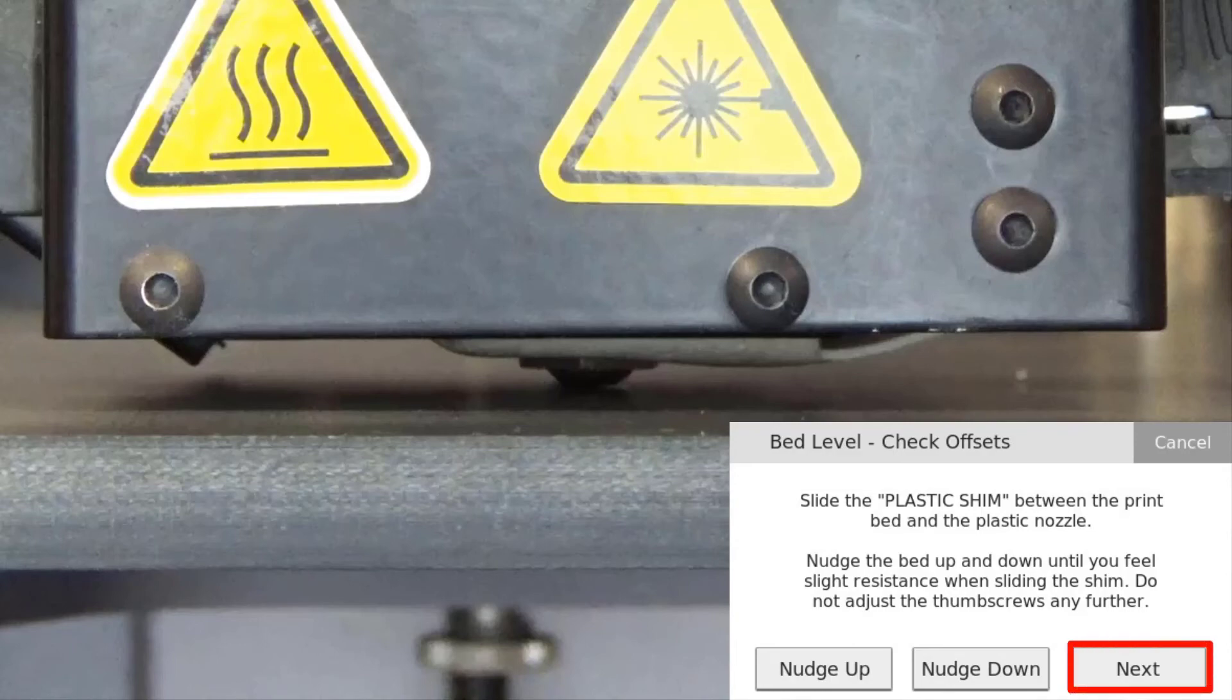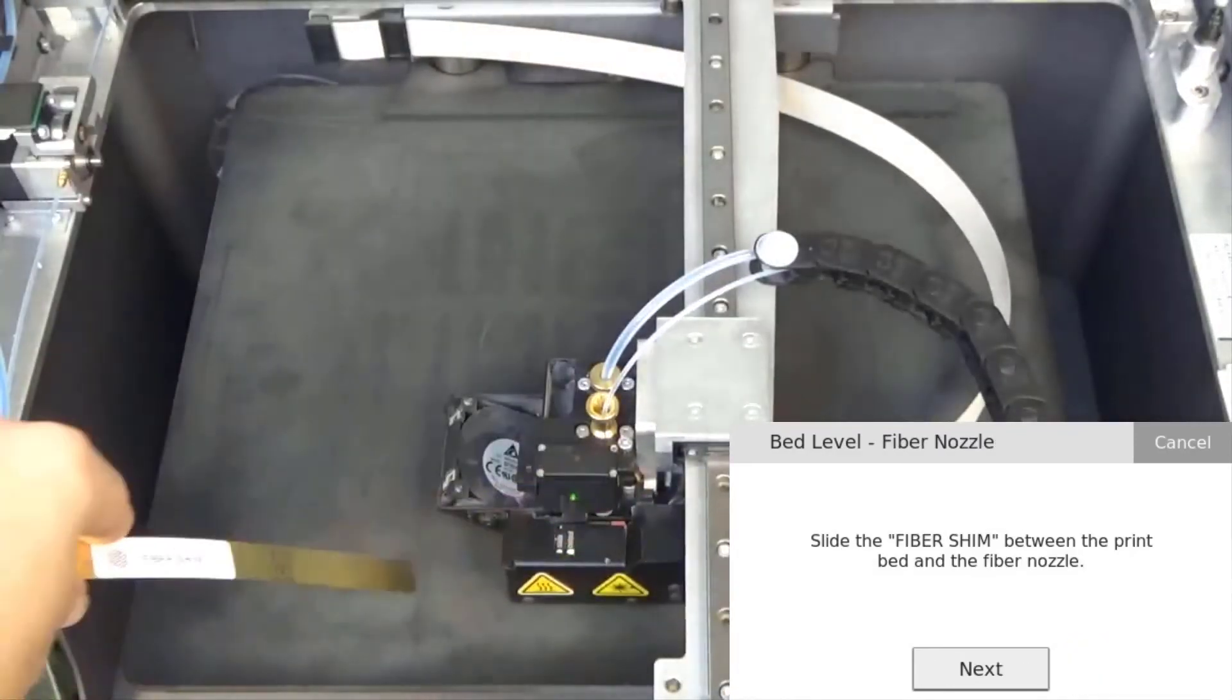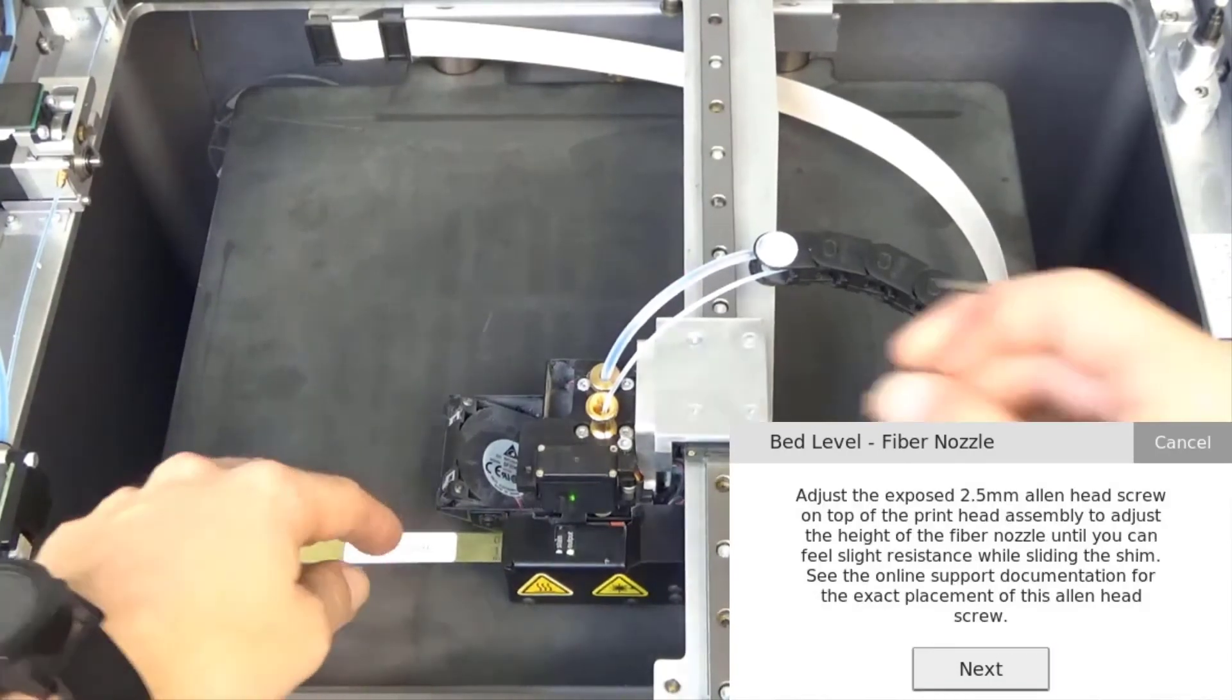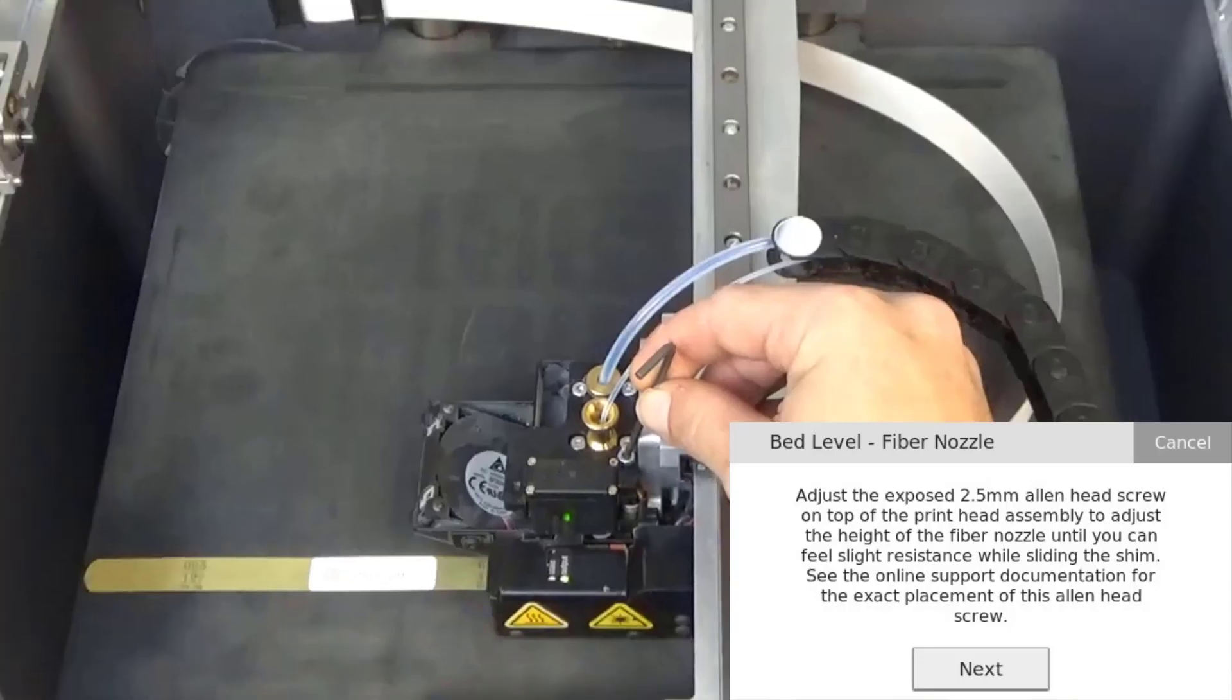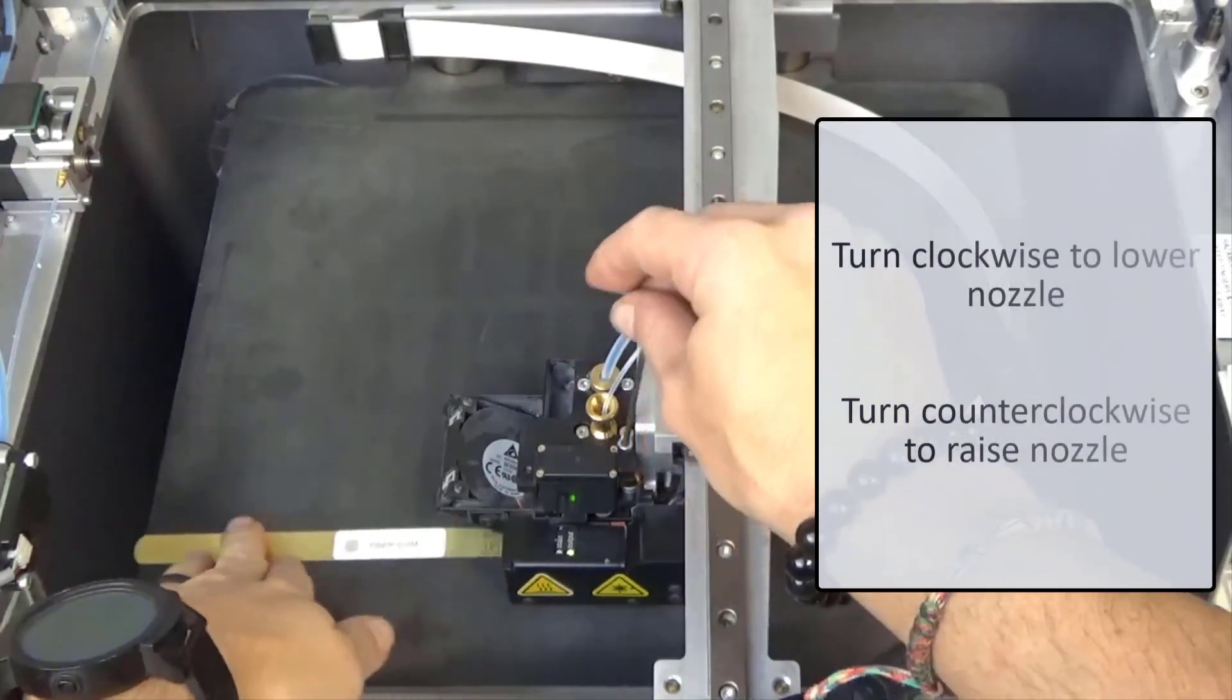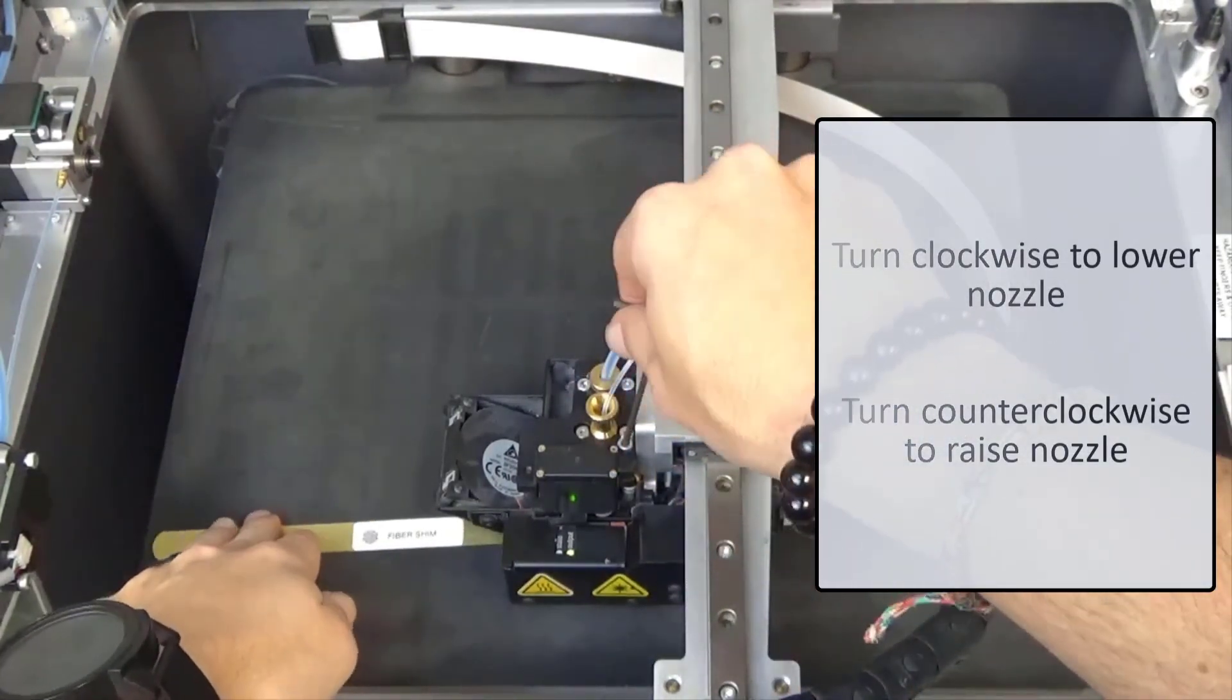Now slide the fiber shim under the fiber nozzle and press next. Use a 2.5mm hex key to adjust the set screw on the top of the print head such that there is slight tension on the fiber shim.